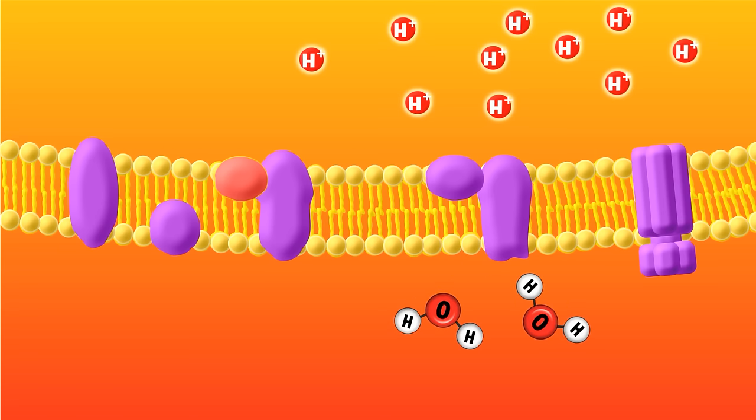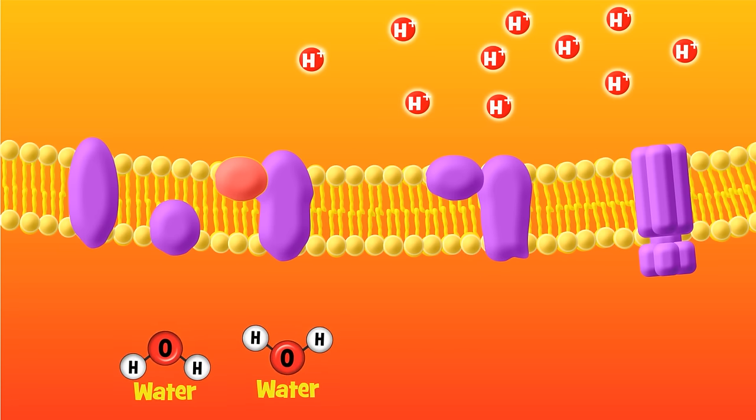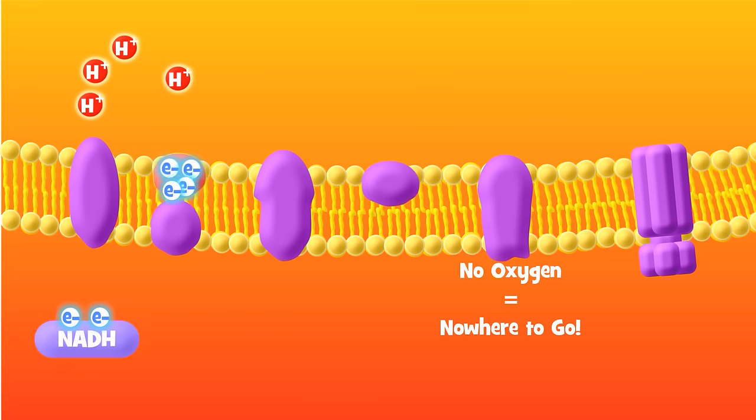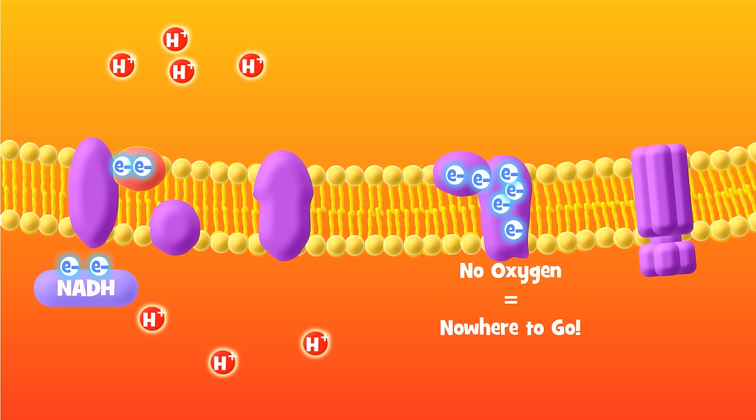This is the reason why you breathe all day, every day. Your cells need oxygen to accept these electrons, or the electron transport chain will grind to a halt, like an LA freeway during rush hour. And if the electron transport chain stops, you won't be able to make enough ATP to keep you alive, and you die. So keep breathing that oxygen.